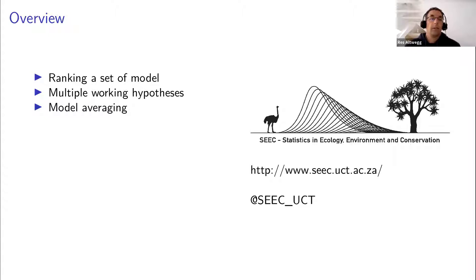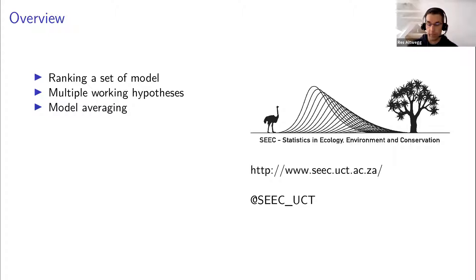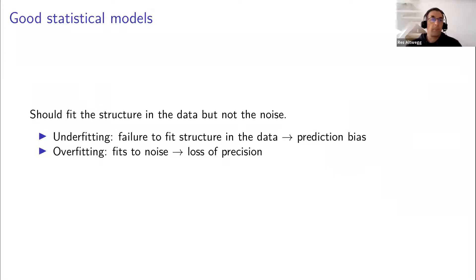Then we are going to talk about how model selection fits in with the idea of having multiple working hypotheses — these are multiple scientific hypotheses that you want to test, and how does model selection help us with that. And finally we are going to explore the idea that maybe we don't have to base our inference on just a single model — maybe we can use our entire model set or several models to draw inference. So, what is a good statistical model?